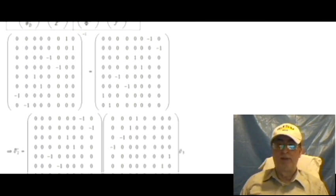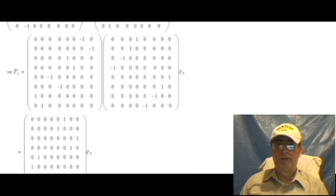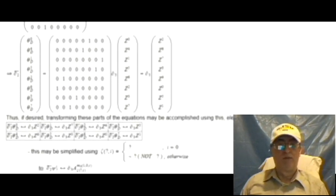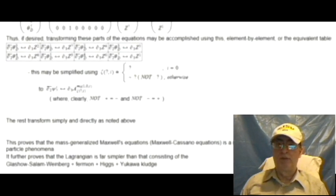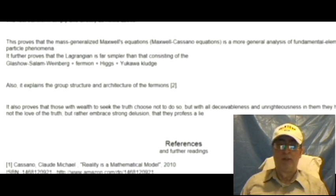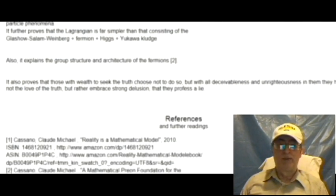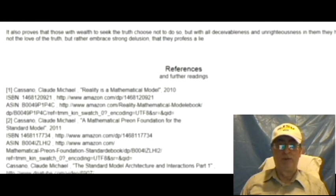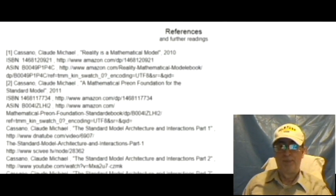This proves that the mass generalized Maxwell's equations, Maxwell-Casano equations, is a more general analysis of fundamental elementary particle phenomena. It further proves that the Lagrangian is far simpler than that consisting of the Glashow-Salam-Weinberg, plus Fermion, plus Higgs, plus Yukawa-Kluge. Also, it explains the group structure and architecture of the Fermions, as shown in reference 2.